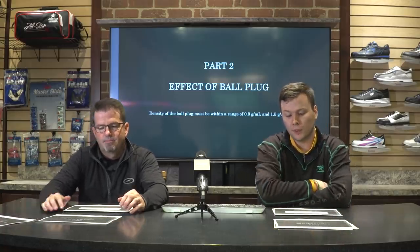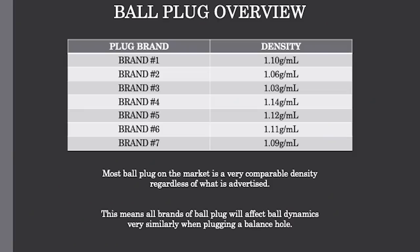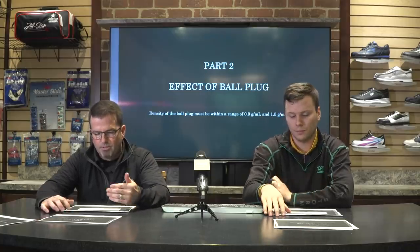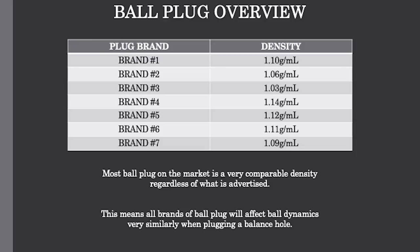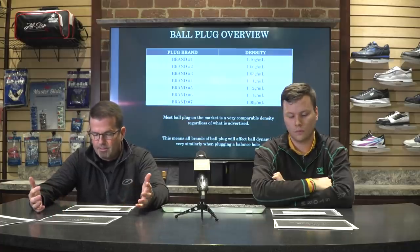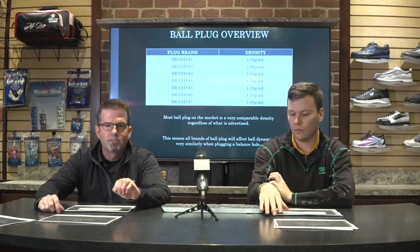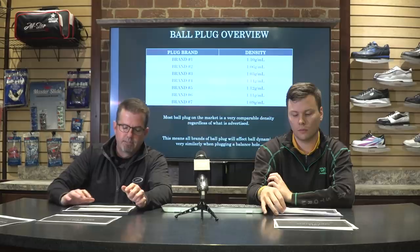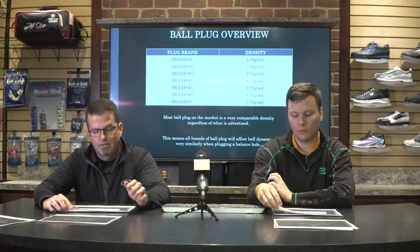So what we did almost a year ago now, we got a lot of different kinds of ball plug — pretty much everything you can find on the market — and we wanted to see what the densities of those ball plugs were. If you look at this chart, you're going to notice they're all pretty comparable overall regardless of what's advertised. Seven different brands, and they're all between 1.03 and 1.14 grams per milliliter. That tenth of a gram per milliliter is not a lot in density, and there's not much difference between all these different ball plugs in the industry.